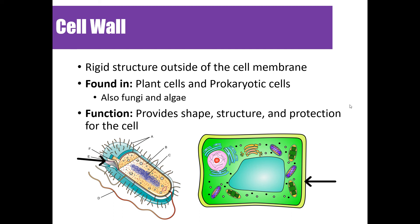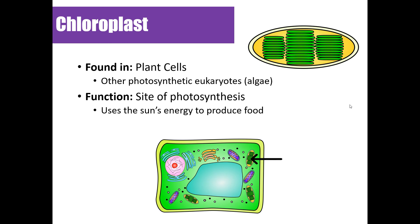The cell wall is a rigid structure outside the cell membrane, found in plant cells and prokaryotic cells such as fungi and algae. It's made of different materials depending on the organism: cellulose in plants, chitin in fungi, and peptidoglycan in bacteria. The cell wall helps the cell maintain its shape, structure, and protection. It is not found in animal cells.